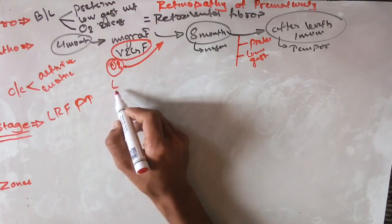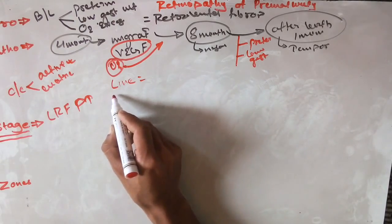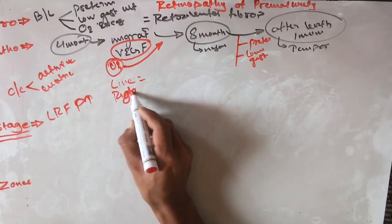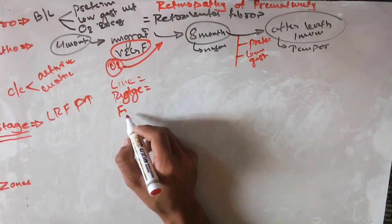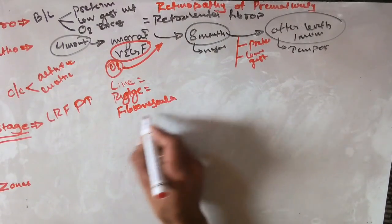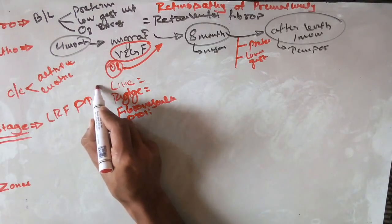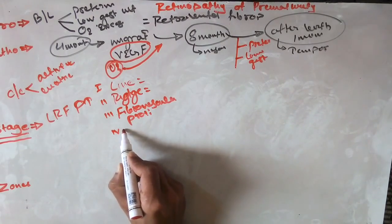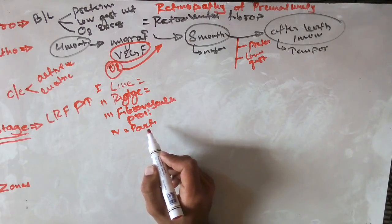Stage 1 (L): a line parallel to the ora serrata is seen. Stage 2 (R): this line converts into a ridge. Stage 3 (F): fibrovascular proliferation is seen. Stage 4 (P): partial detachment begins — this is a partial type of retinal detachment which does not involve the macula.